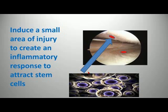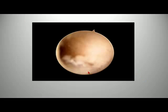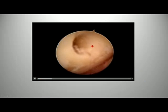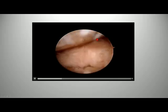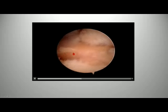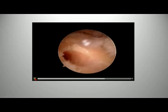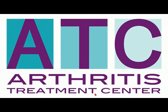That's how stem cells placed into the knee know where to go — because stem cells migrate to areas of injury. It looks like this: this is an area in the femoral head where there's bare bone and we've created a very small hole that looks large but is only two millimeters in diameter. We've done the same in an area of bare bone involving the tibial plateau.